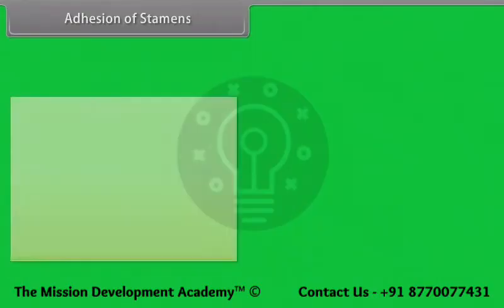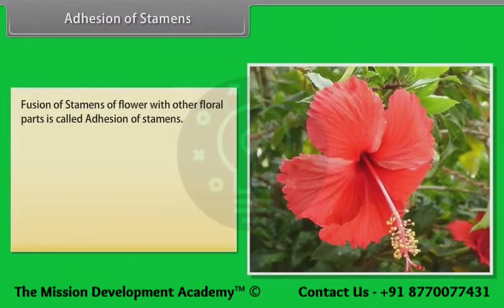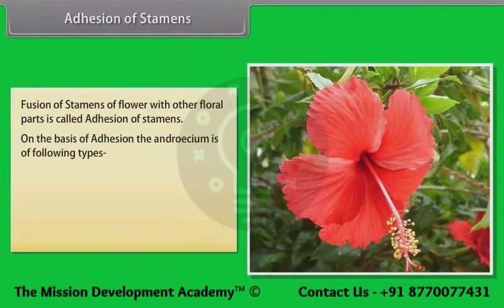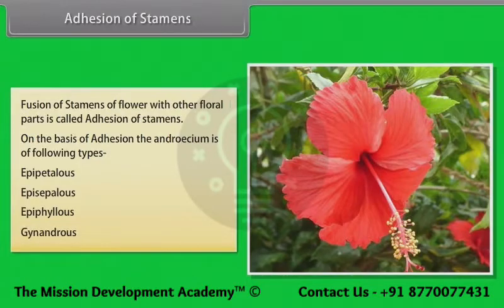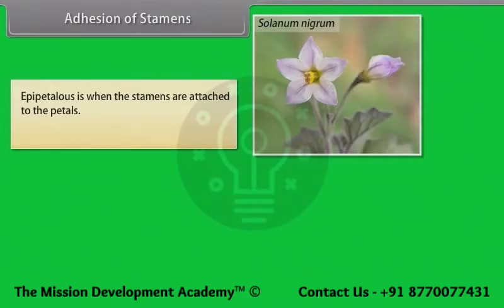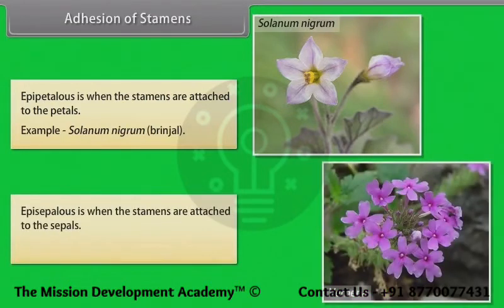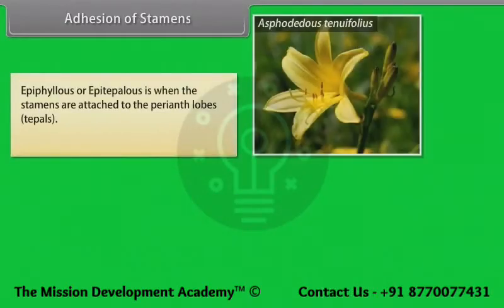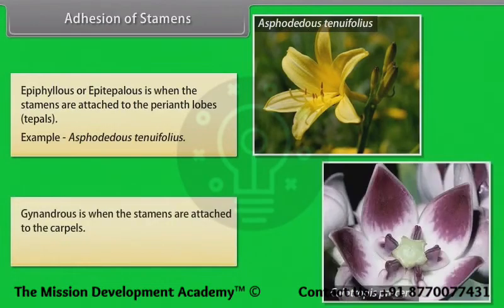Adhesion of stamens is the fusion of stamens with other floral parts. On the basis of adhesion, the androecium is of the following types: Epipetalous — stamens attached to petals, example Solanum nigrum (brinjal); Episepalous — stamens attached to sepals, example Verbena; Epiphyllous or Epitepalous — stamens attached to perianth lobes (tepals); Gynandrous — stamens attached to carpels, example Calotropis procera.